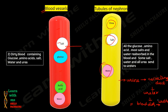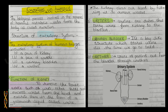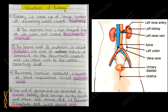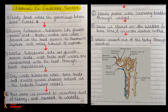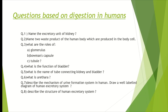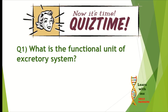This is how the process of filtration takes place in human beings. Now these are the notes of the excretory system — quickly change the slides and pause the video to take a screenshot. These are the questions asked in previous years. And now one question is there for you as a quiz — answer it in the comment section. The question is: what is the functional unit of the excretory system?